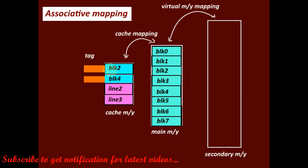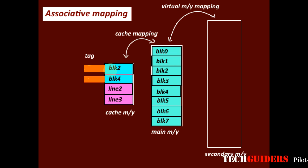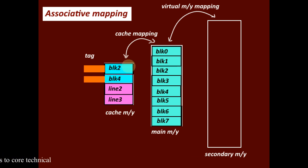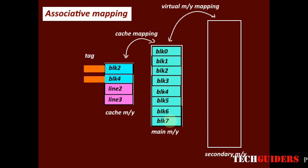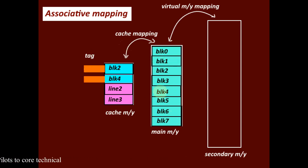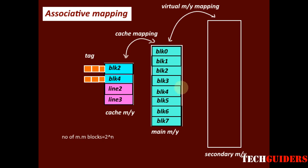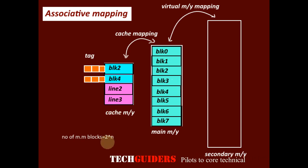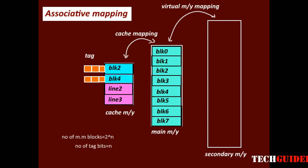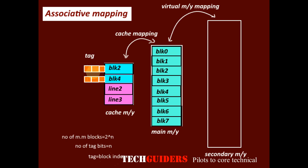The tag associated with the cache line helps identify which main memory block is copied to that cache line. In this example, each cache line is mapped to 8 main memory blocks, so to uniquely address 8 blocks we need 3 bits in the tag. In general, if there are 2^n main memory blocks, the number of bits in the tag is n bits, because the entire block index is acting as the tag.